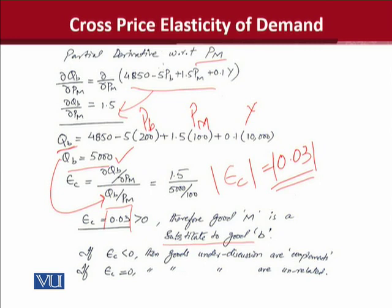The magnitude of 0.03 is much less than one, meaning the effect of the percentage change in the price of mutton is very small on the percentage change in the quantity demanded of beef. It is also relevant to list the other possibilities: Epsilon C is less than zero when we talk about complements, and Epsilon C equals zero when goods are unrelated, because there is no relationship between unrelated goods, their quantities, or their prices. In this way we can calculate the cross price elasticity of demand using partial derivatives and interpret the results.